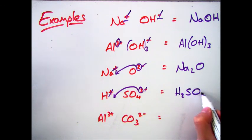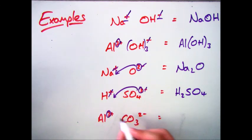Now the final one is probably one of the most complicated you'll come across. We have Al3+ and CO3 2-, so take the numbers, swap them around once you've got rid of the charge. So that 2 goes down there,